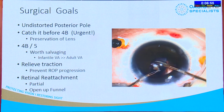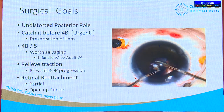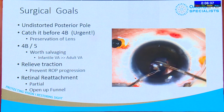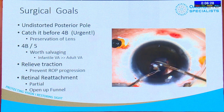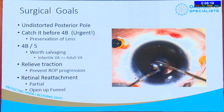The surgical goal is to maintain an undistorted posterior pole, catch the detachment before 4B — much like a macula-on retinal detachment — and preserve the lens. Even in stage 4B or stage 5, sometimes even years after being found, it's still worth trying to intervene. Patients from rural areas or Indonesia sometimes present one or two years in. Some stage 5s are very severe, but some do get some visual recovery. The aim is to relieve traction, prevent ROP progression, and achieve retinal reattachment.